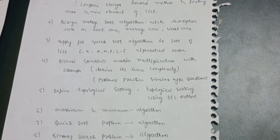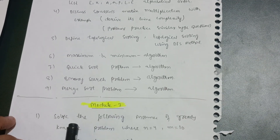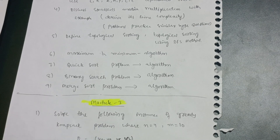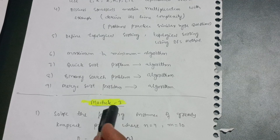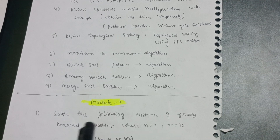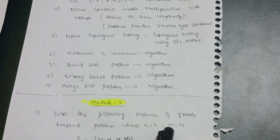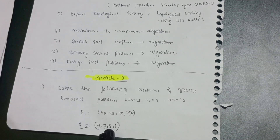Module 3 is a problematic module — focus more on problems. Solve the following instance of the greedy knapsack problem where n=4, m=10, profits p = {40, 42, 45, 42}, and weights w = {4, 7, 5, 3}.